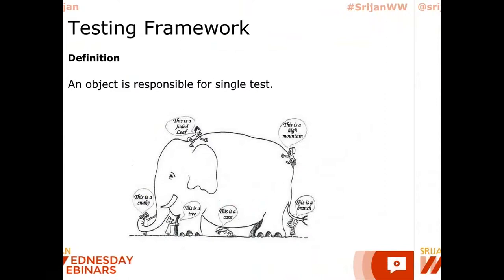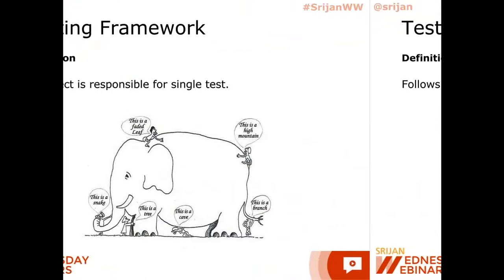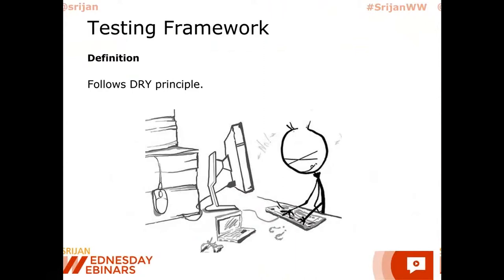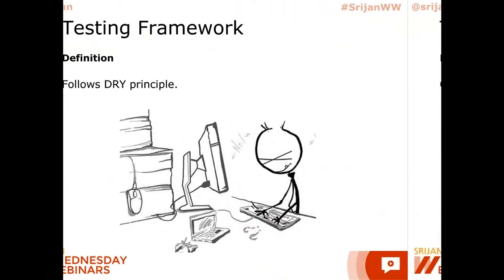Most often we try to repeat our tasks, but if a login functionality exists, it is not essential that each feature set or test we write should cover those things again — it should follow the DRY principle, which means we shouldn't repeat ourselves. And it should be extensible, meaning I should be able to extend previously defined functionality without modifying the source code.